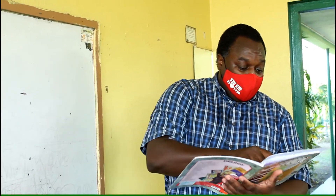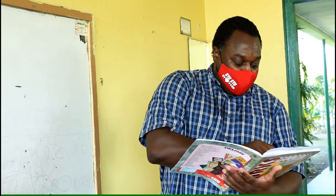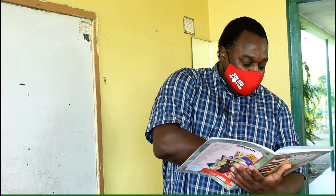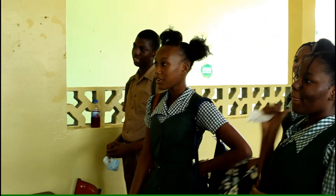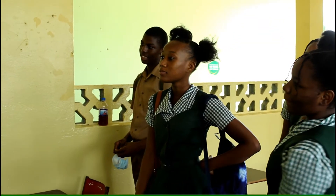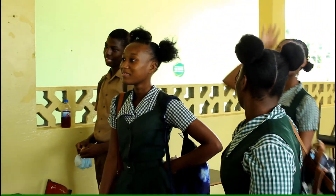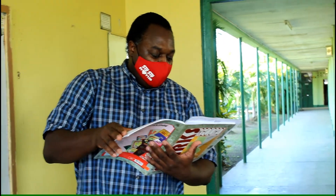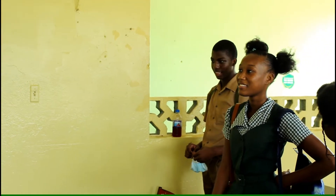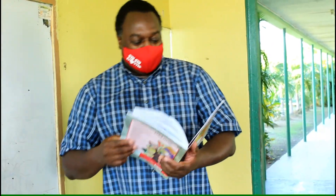Greetings, welcome back to the channel. Now, my second formers, if you have been paying attention, you would have known that we have reached a stage where we're at weather, and so far we have identified eight elements of weather. If you want to follow, it's in your textbook on page 144, and that is the skills in geography.